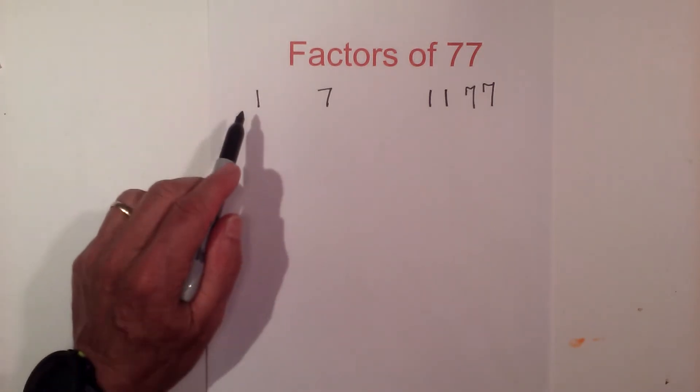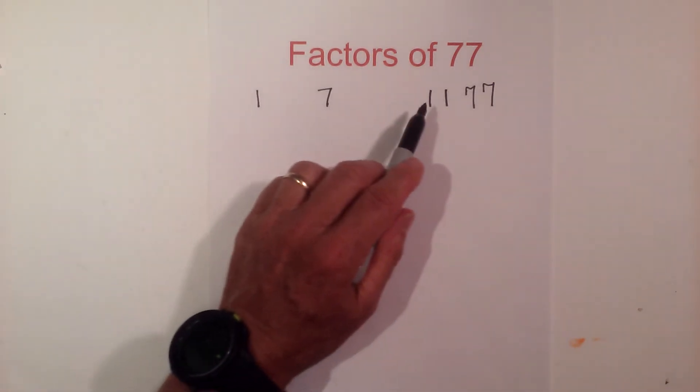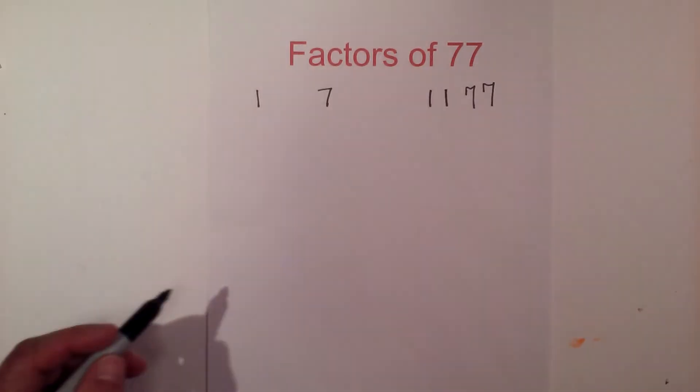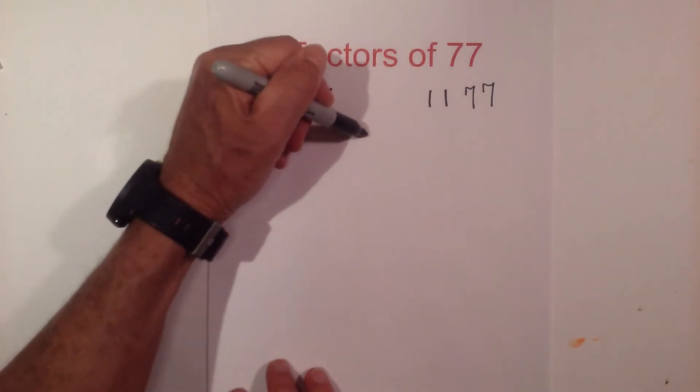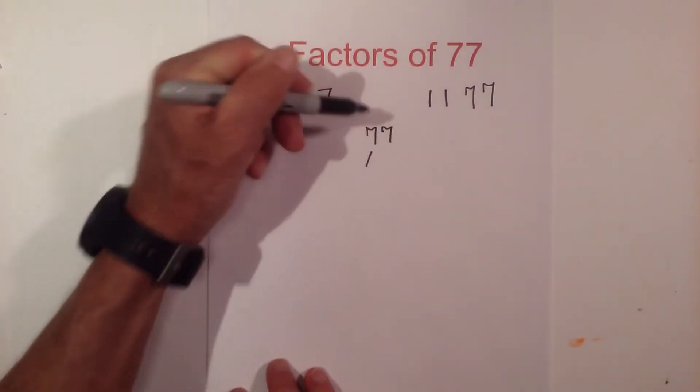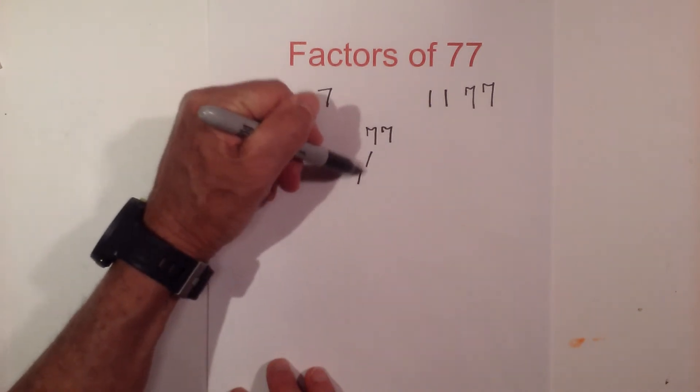So the factors of 77 are 1, 7, 11, 77. And then the prime factors—if we create a factor tree, 7...